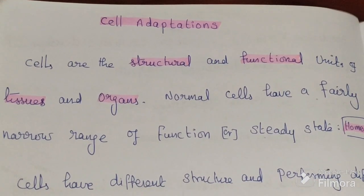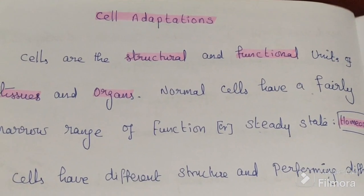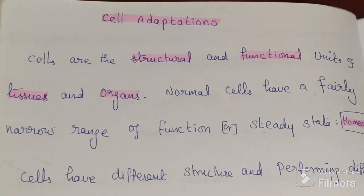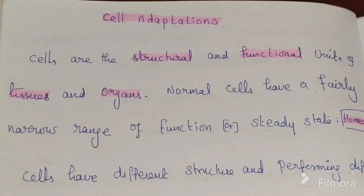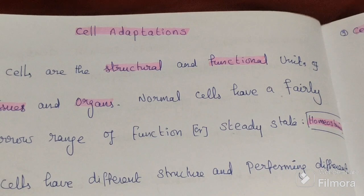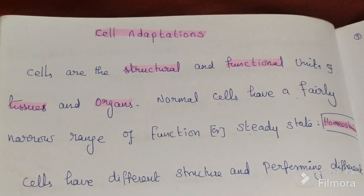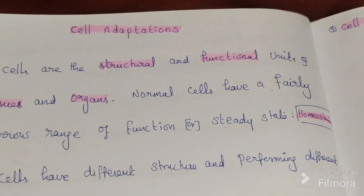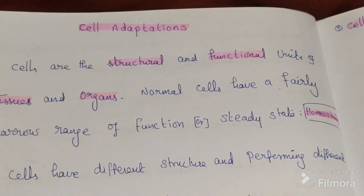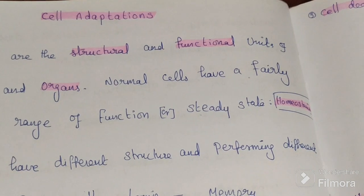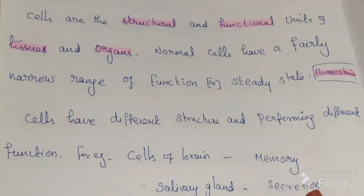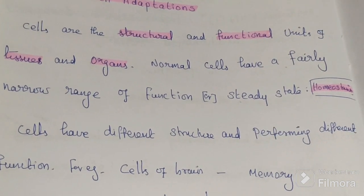Today's topic of discussion is cell adaptation. The human body, from head to toe, is made up of cells. Cells are the structural and functional unit of tissue and organs. Normal cells have a fairly narrow range of function, or steady state, that is homeostasis. What is homeostasis?